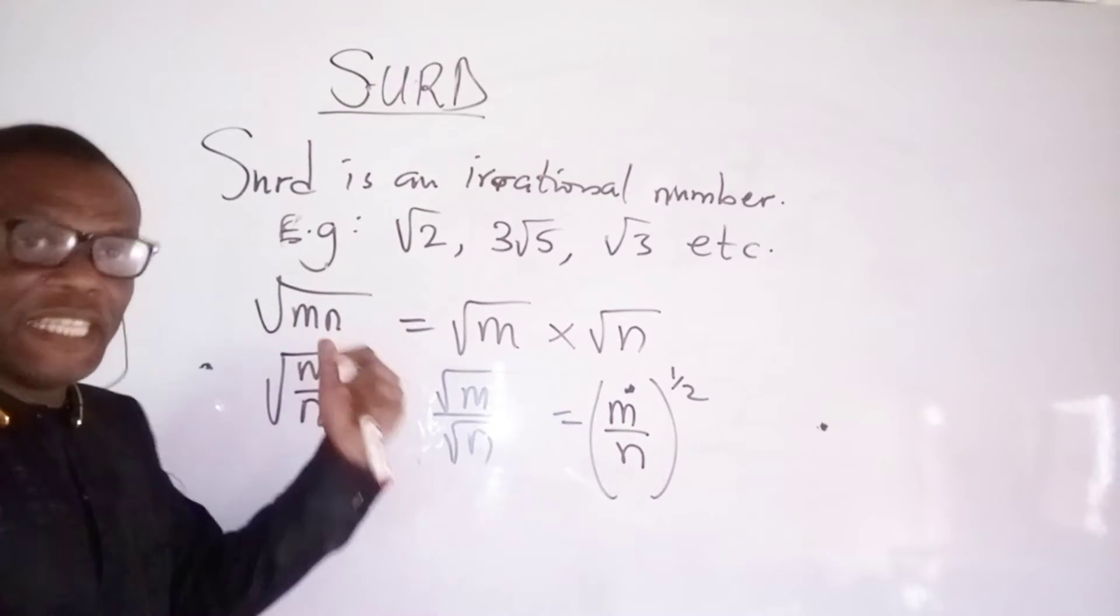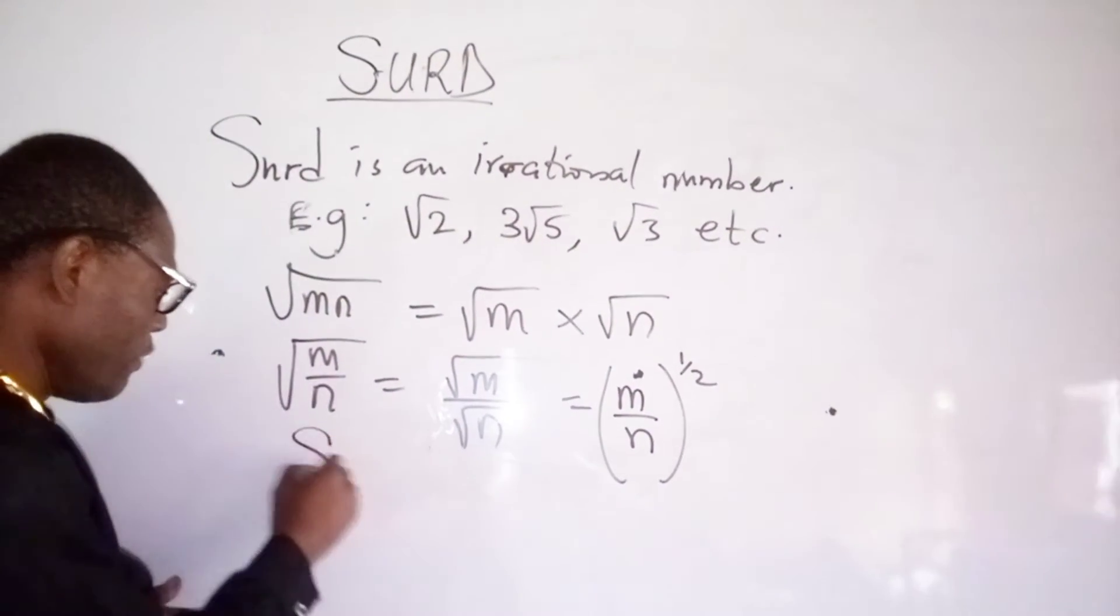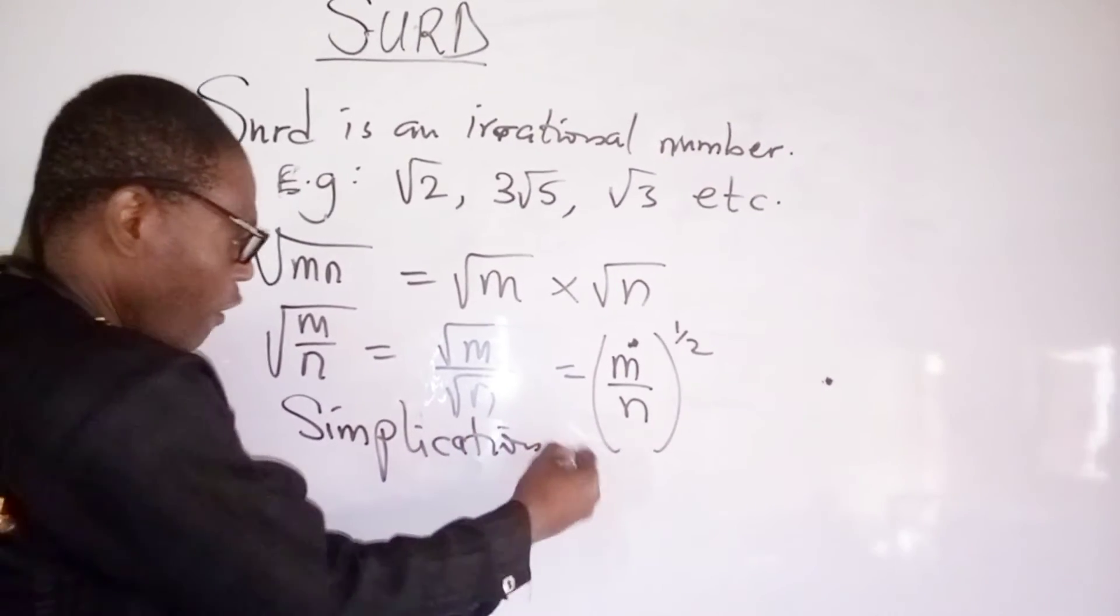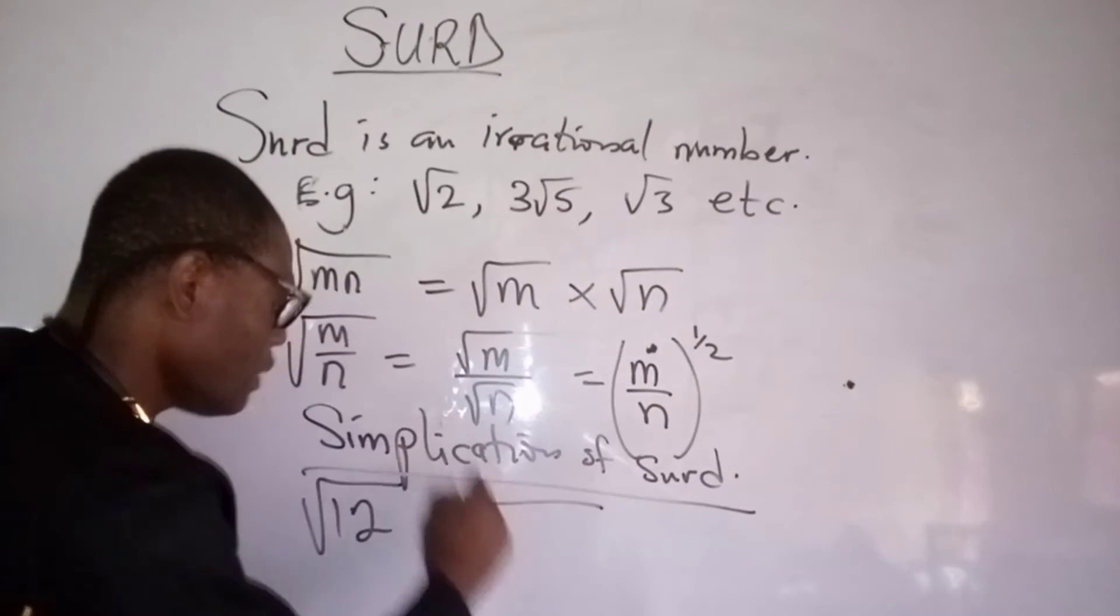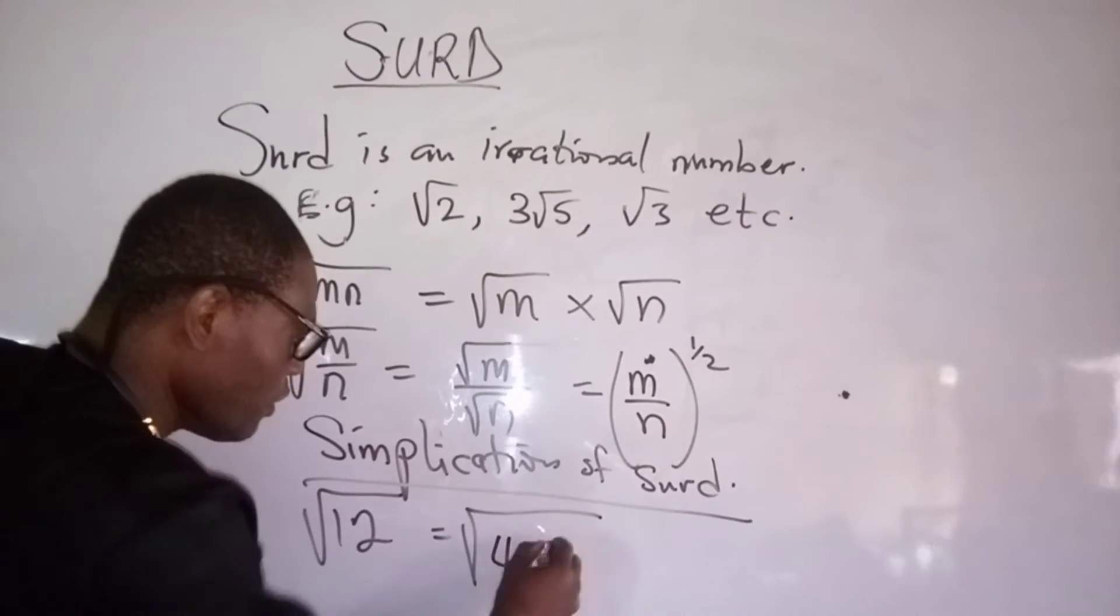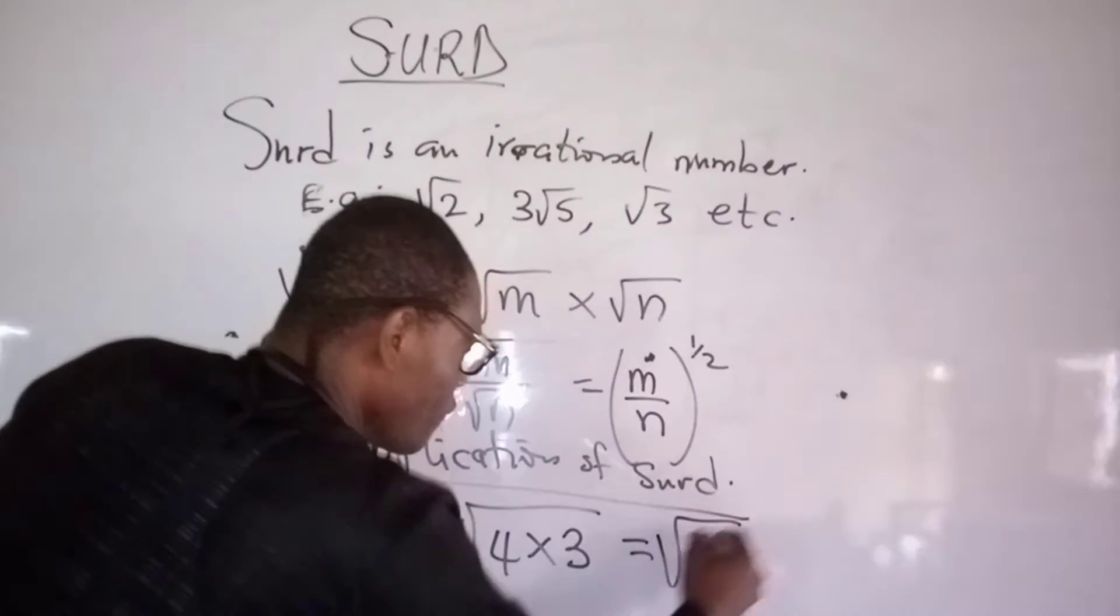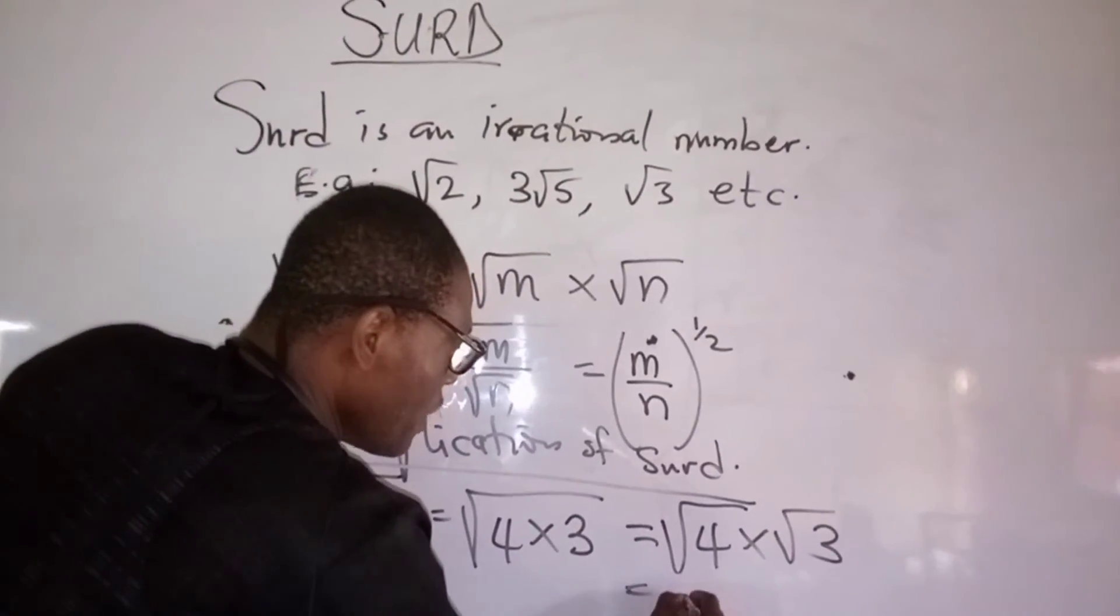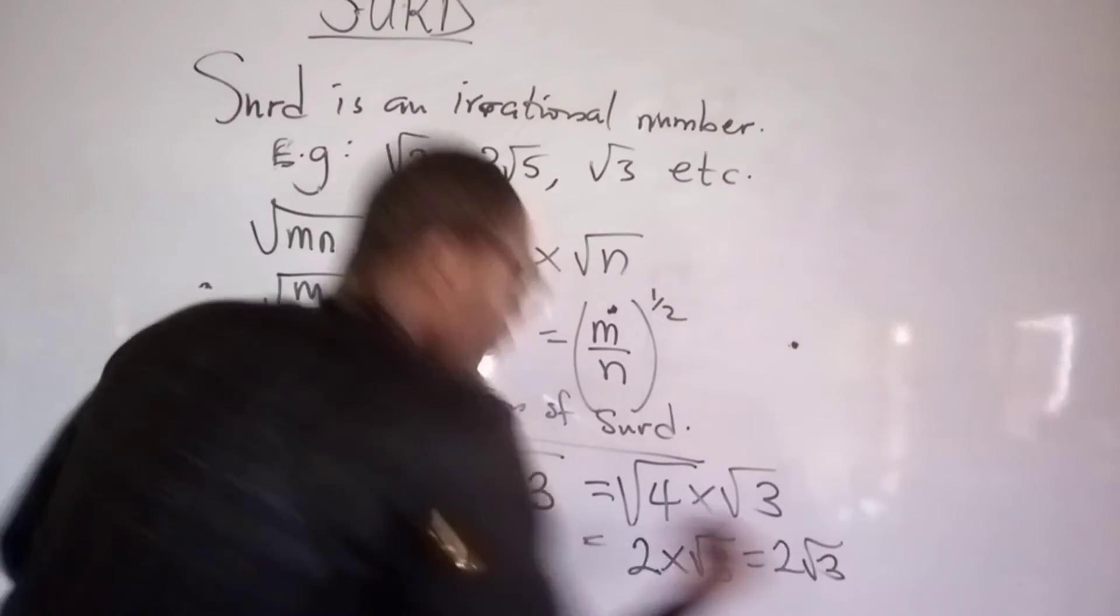Now, let me give you an example of simplification of surds. If I have square root of 12, it can also be 4 times 3. So we have square root of 4 times square root of 3, which is equal to 2 times square root of 3, which is equal to 2 root 3.